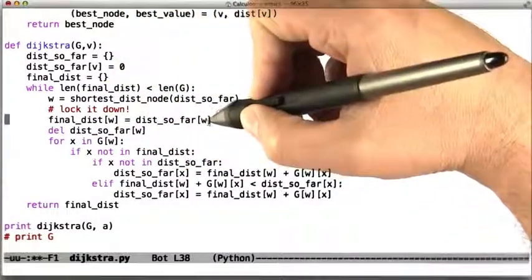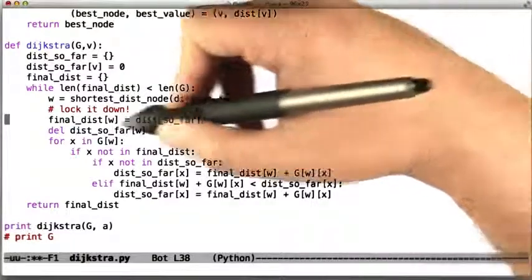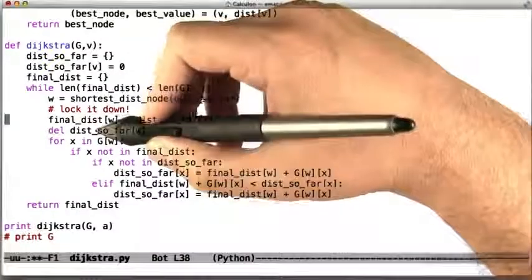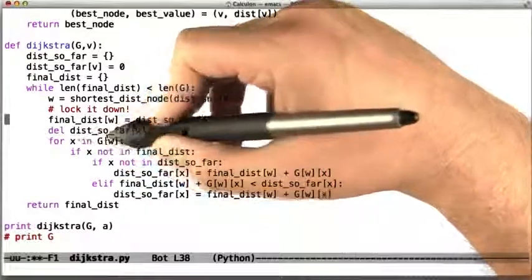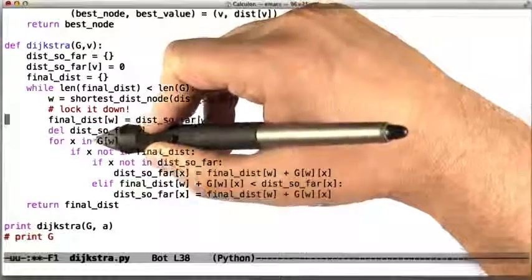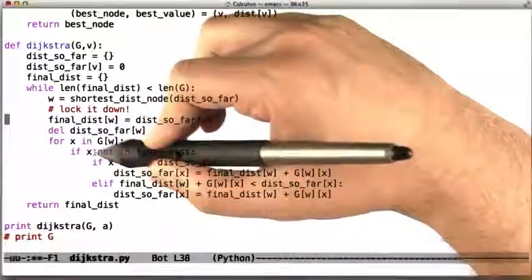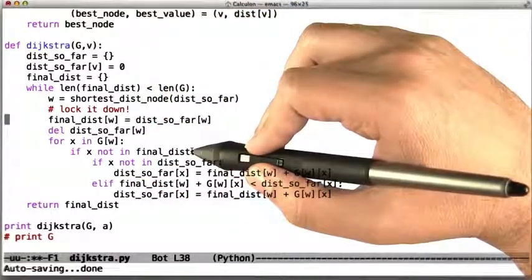As long as there's more nodes that we need to analyze, take the node that has the shortest distance of all the ones so far, call that w, and lock it down. So locking it down in this case involves me printing a debugging message, saying that the final distance for w is whatever we computed the distance so far as, so we now know that this is the final distance, and then we delete that from the dist_so_far structure. Then we go through its neighbors.